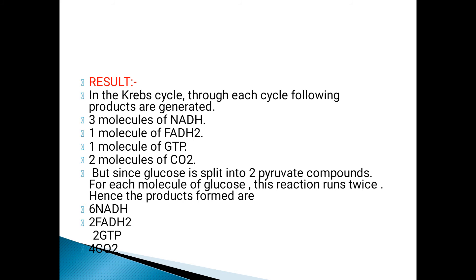Since glucose is split into two pyruvate molecules, for each molecule of glucose this reaction runs twice. Because one glucose gives two pyruvate molecules, each pyruvate enters the cycle, and therefore the reaction doubles — meaning the amounts of NADH, FADH2, GTP, and CO2 are all doubled.